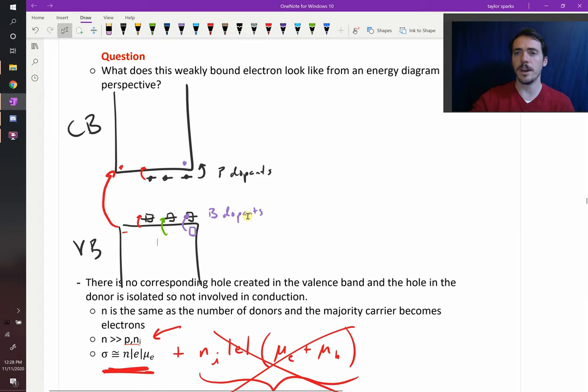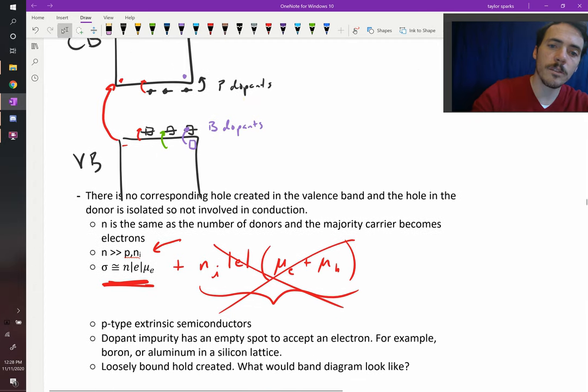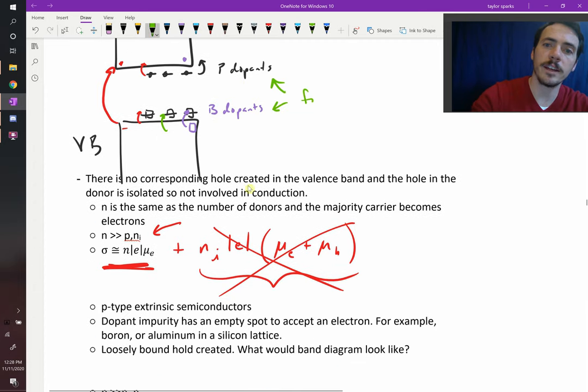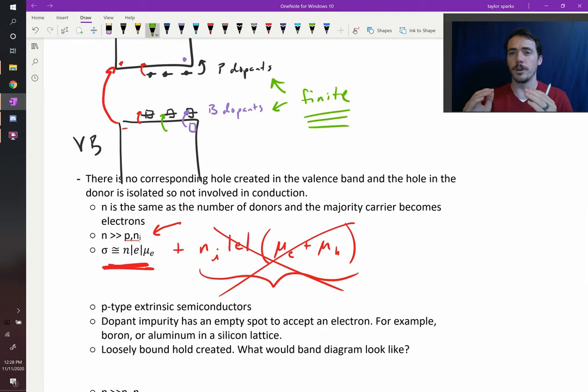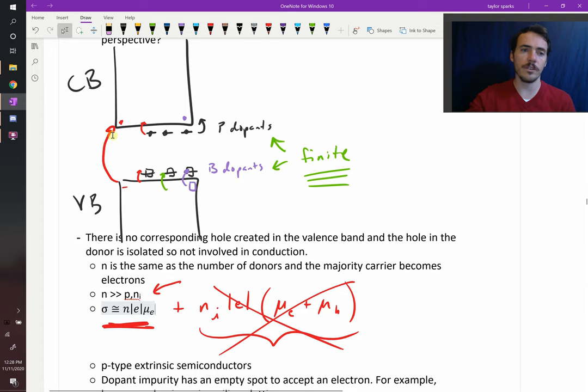It does take some amount of energy to promote these across that gap. But what's interesting is that the dopants, both P and B, are finite. You dope it with X number of those, and once they've all been ionized to either accept an electron or donate an electron, you're done. They can't give you more. Whereas with an intrinsic, you have tons of electrons, way more than dopants. And so at high temperatures, you're going to be able to promote way more intrinsically than you're able to get from your finite number of extrinsic dopants.